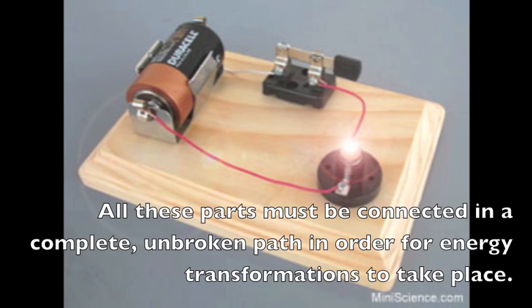All these parts must be connected in a complete, unbroken path in order for energy transformations to take place. If one piece is missing, there will be no light in the bulb. That other little black thing beside the battery would probably be a switch to turn it on and off.